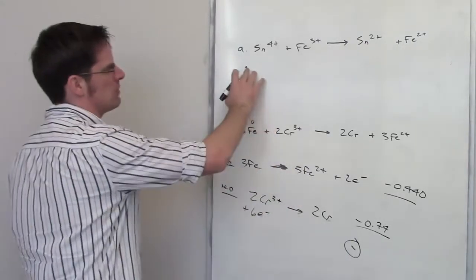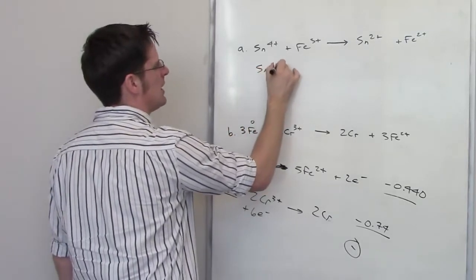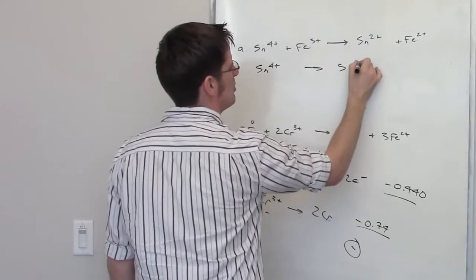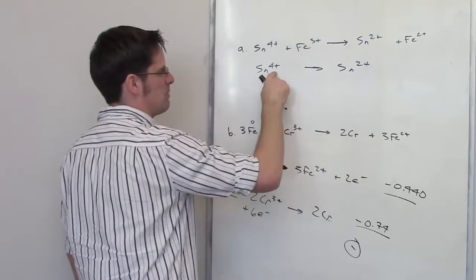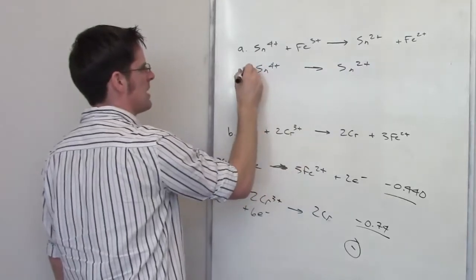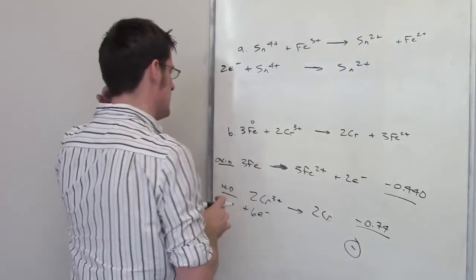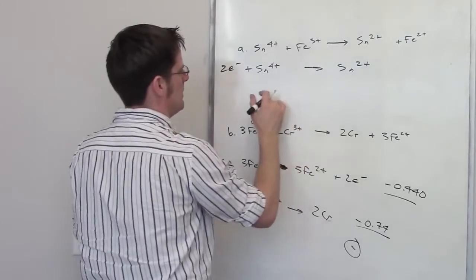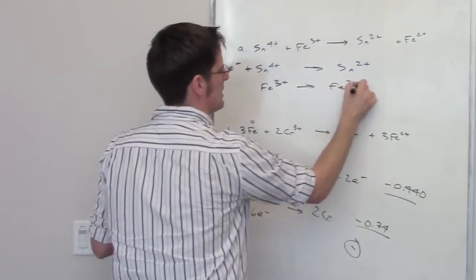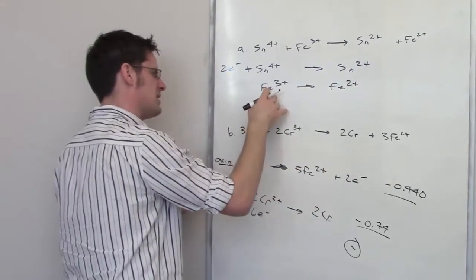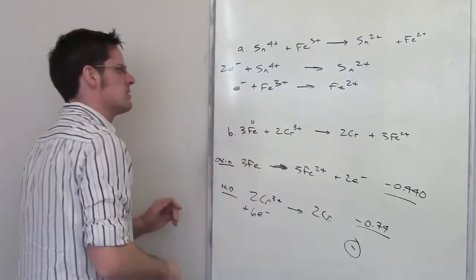I want to do something similar for this top reaction. So I've got tin four plus changing into tin two plus. How does that happen? This tin is gaining electrons because it's going from being positive to being a little bit less positive. So I'm going to have to throw down two electrons here on the left side of the equation. Now I've got iron three plus being converted into iron two plus. Once again, iron is going from being a positive to being a little bit less positive. But the only way you can do that is by having it gain electrons.